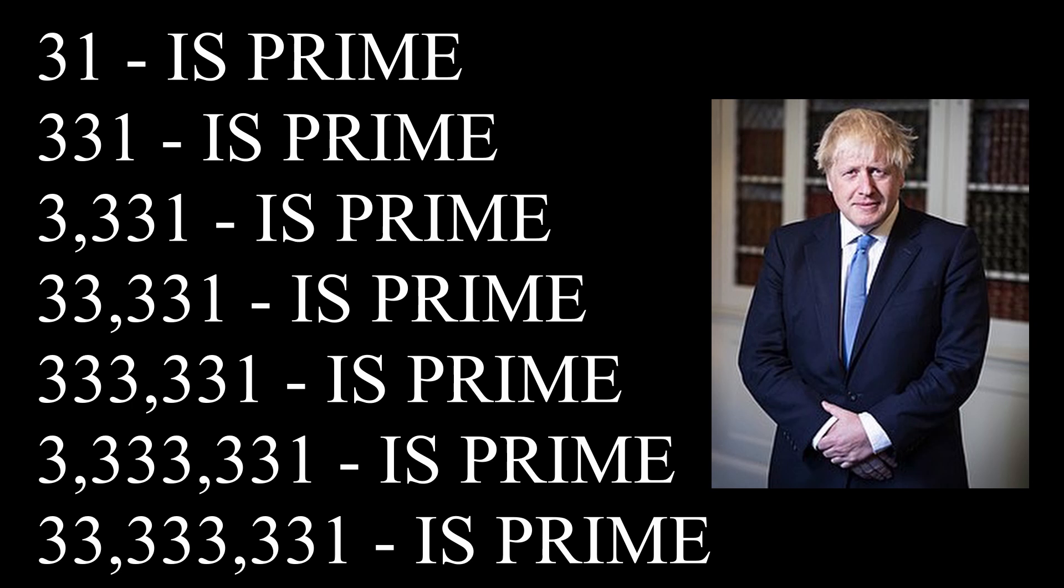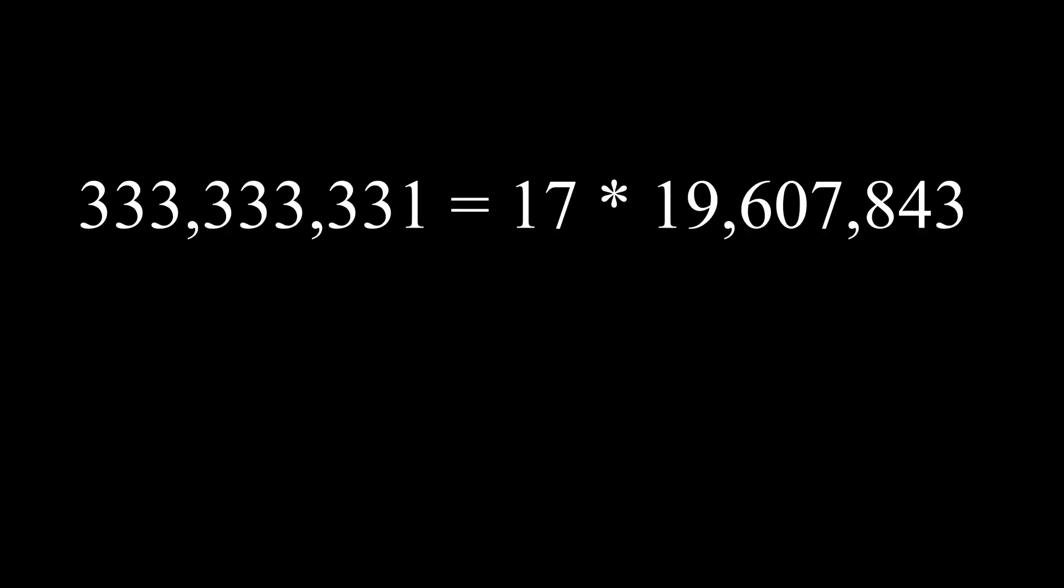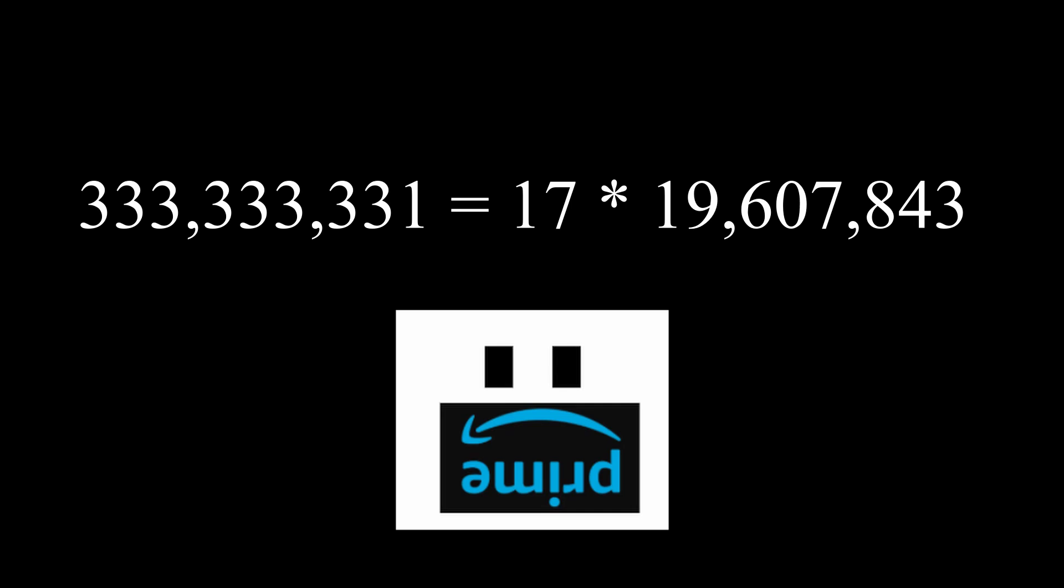The prime minister would be correct, that is, up until the prime composite number. It turns out that the prime composite number is equal to 17 times 19,607,843, of course making it not prime.